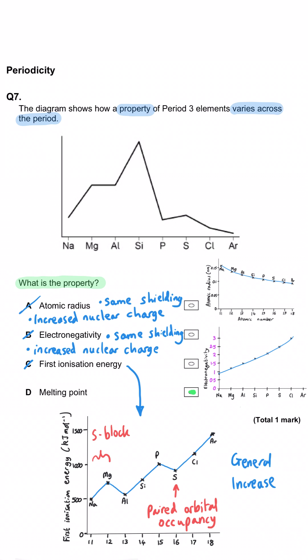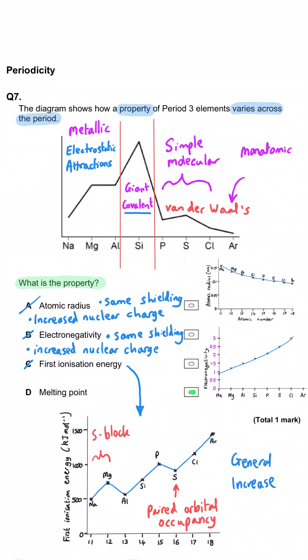So it must be melting point. And that makes sense because we've got our three metals on the left hand side with quite high melting points, the giant covalent silicon with a huge melting point, and then the four elements on the right hand side that only have van der Waals forces. So D is correct.